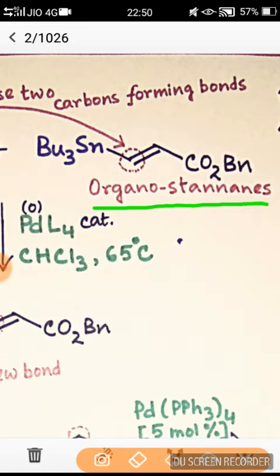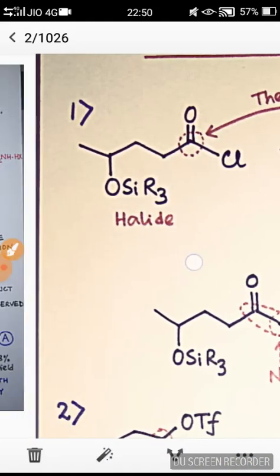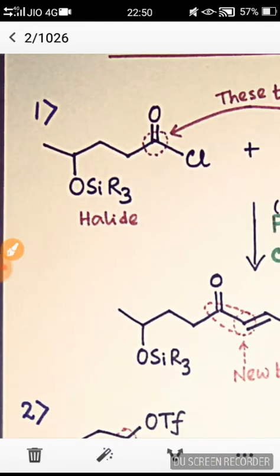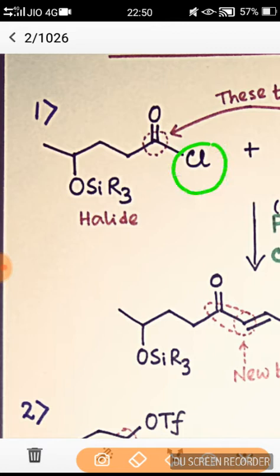Bu3Sn, this is the organotin compound. And this is the benzyl group which is protecting the CO2H during the reaction with this halide. This halide has one leaving group, chloride.